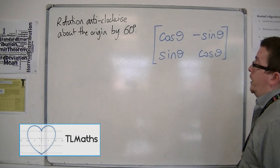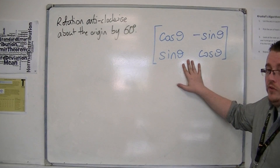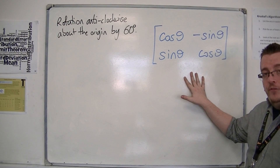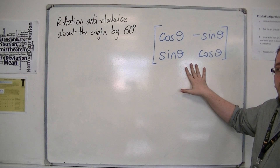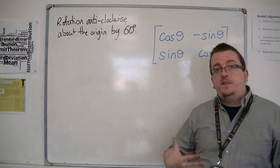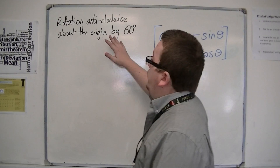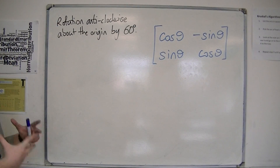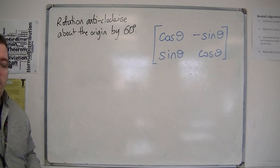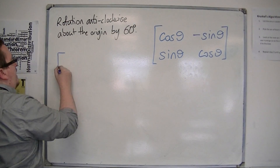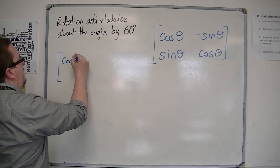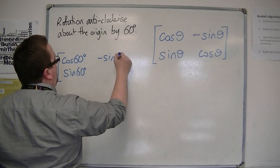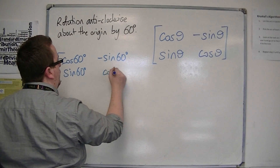In the last video I showed you where this matrix came from — it defined a rotation about the origin anticlockwise by the angle theta. Now if I wanted to find the matrix for a rotation anticlockwise about the origin by 60 degrees, all I need to do is substitute 60 degrees into this matrix: cos, sin, minus sin, and cos.